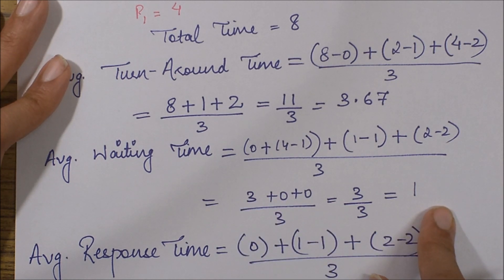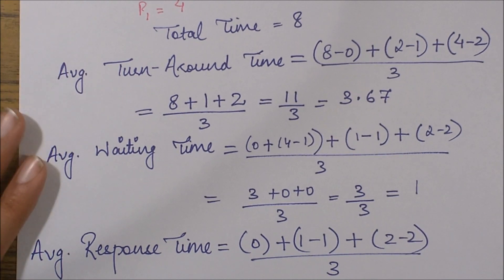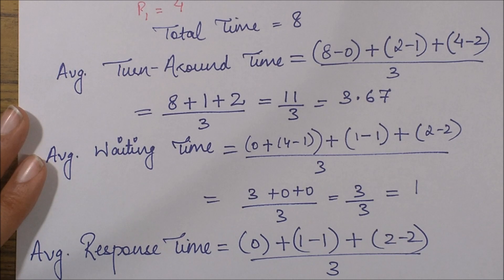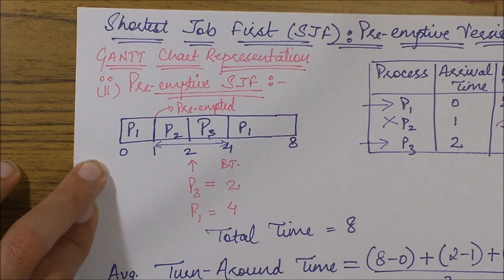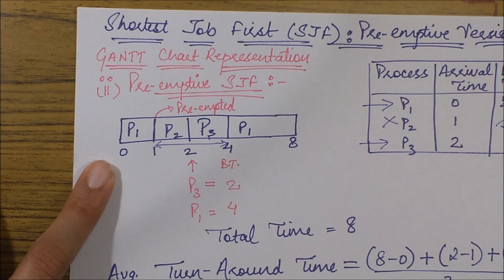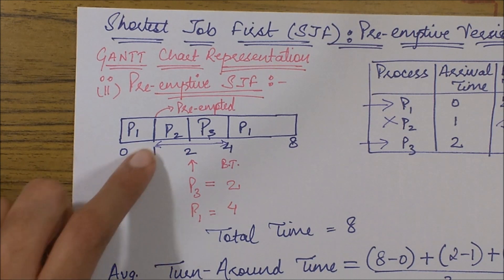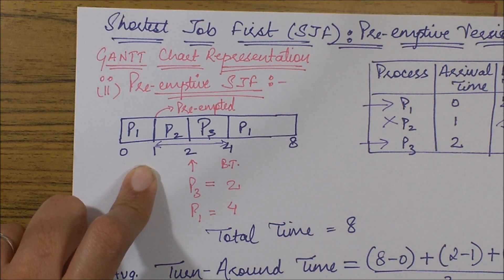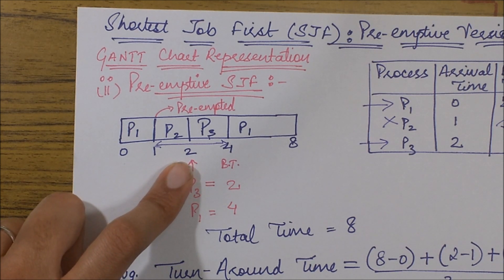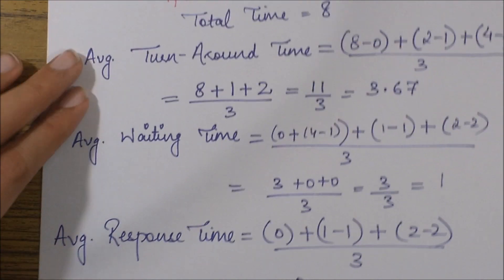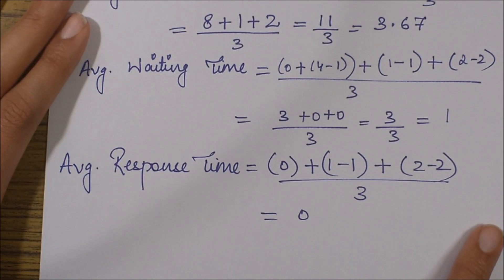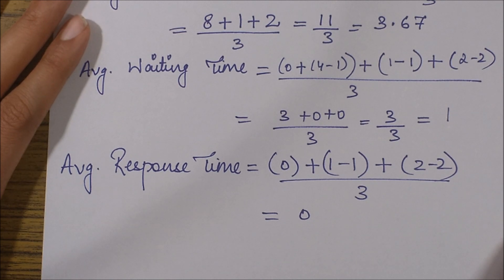Finally, average response time is the sum of response times of all processes divided by the number of processes, which is 3. Response time is the time instant at which you got the first response from a process minus its arrival time. For P1: first response at 0 minus arrival 0 equals 0. For P2: first response at 1 minus arrival 1 equals 0. For P3: first response at 2 minus arrival 2 equals 0. So average response time is (0 + 0 + 0) / 3 equals 0, which is a very good measure.